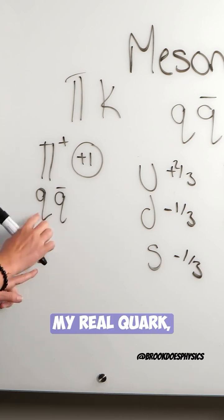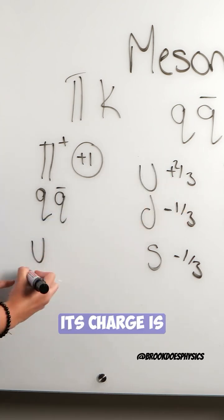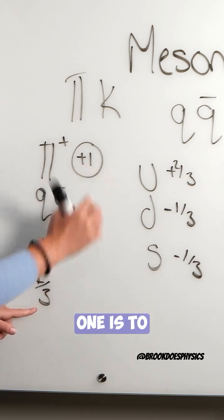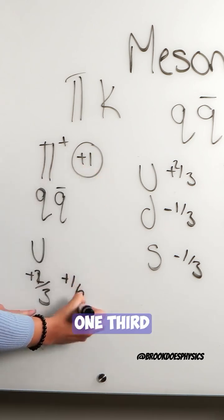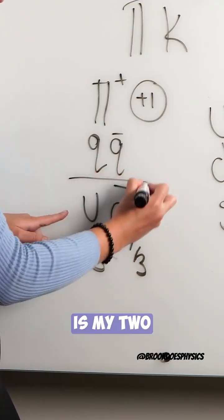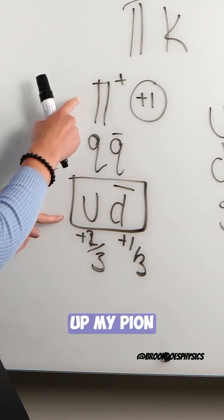So I'm going to use my up quark first, my real quark, because I know its charge is plus two-thirds. And the only way for me to get plus one is to add another plus one-third. So I have to use the anti-down quark. So I'm going to use my anti-down quark, and that then is my two quarks that make up my pion positive.